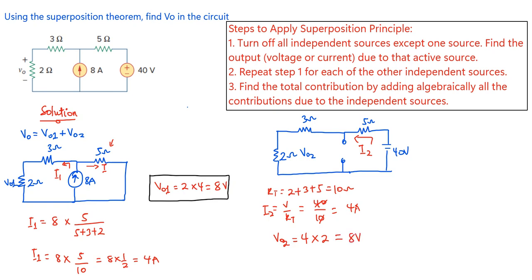So V0 = 8 volts + 8 volts = 16 volts. That is the voltage drop across the 2 ohms resistor when the 8 amperes current source and the 40 volts voltage source act together.